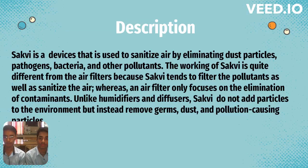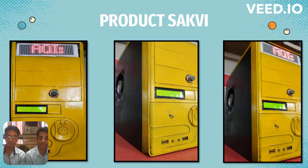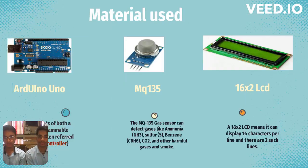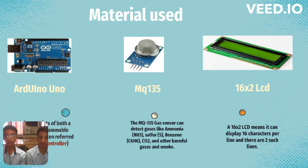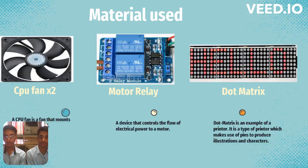Let us show the prototype of our SAKUID. As you can see, all the components are present. For the controller we have used Arduino Uno. For the gas sensor we have used MQ135. For displaying the AQI value we have used an LCD. We have used two fans for inlet and outlet of the air, a motor relay to control the speed of the fans, and a dot matrix to monitor the current AQI level of your SAKUID.